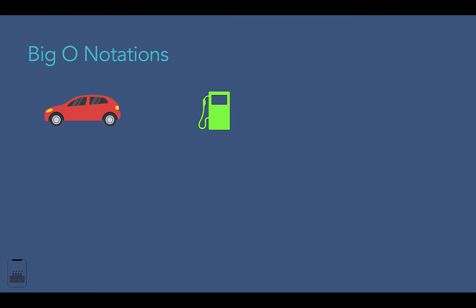A car can perform differently based on the condition. This number can be different based on which condition you are driving the car. If you drive your car in city traffic, it takes more petrol to reach 100 miles than when driving on the highway. There might also be situations where we drive in mixed conditions — both traffic and highway. Let's imagine it takes 20 liters in city traffic, 10 liters on highway, and 15 liters in mixed condition.